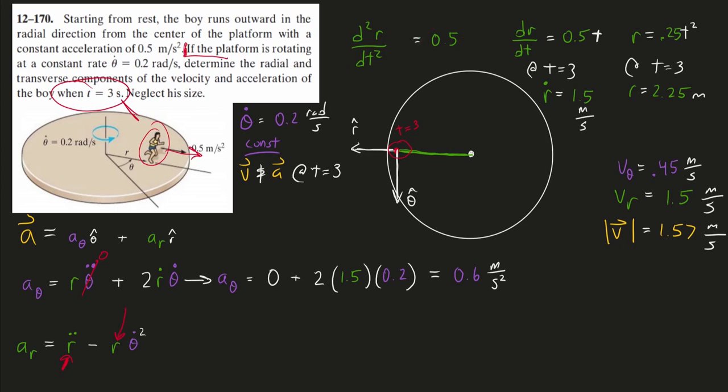We know the r at the instant in question, and we know the angular speed is that constant 0.2. So we're all good here. We'll get 0.41 meters per second squared.